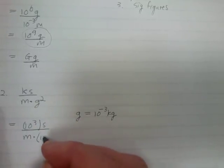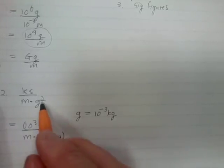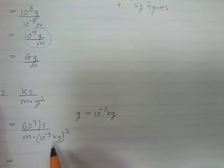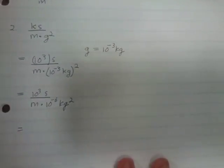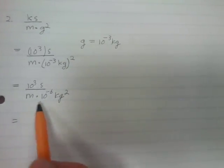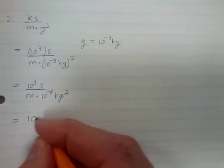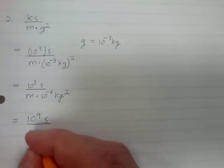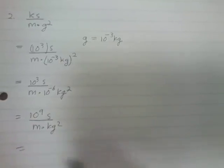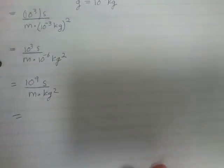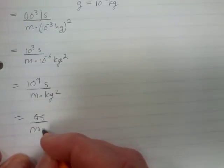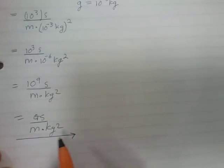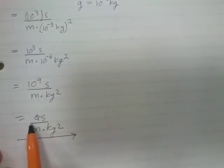We substitute that in: a gram is 10 to the minus 3 kilograms, and we have to square it, so that becomes (10 to the minus 3)² kilograms squared. Multiplying out gives 10 to the 3 seconds over meter times 10 to the minus 6 kilograms squared. Bringing the denominator to the top gives 10 to the 9 seconds per meter·kilograms squared, which in prefix form is gigasecond per meter·kilogram squared.